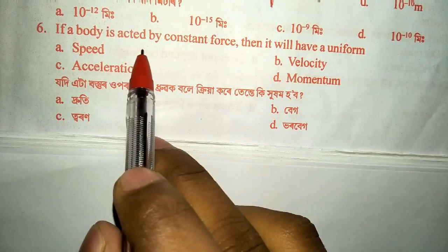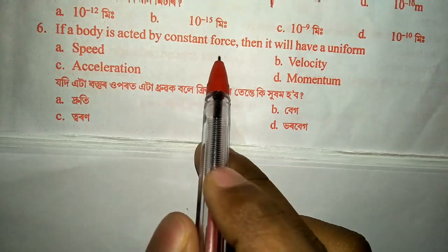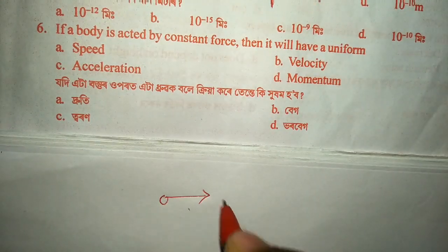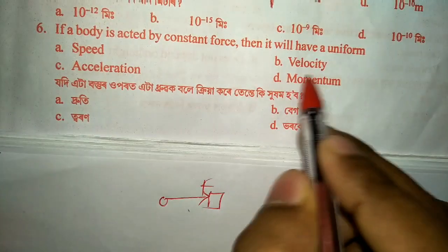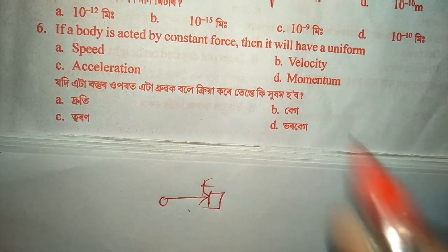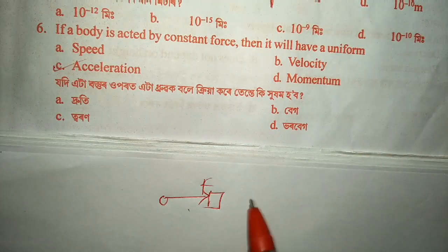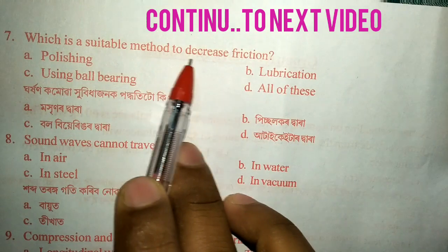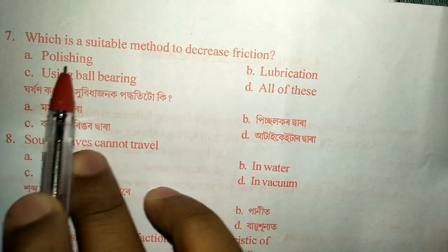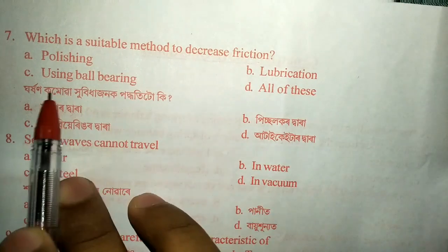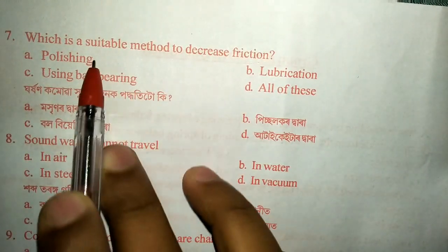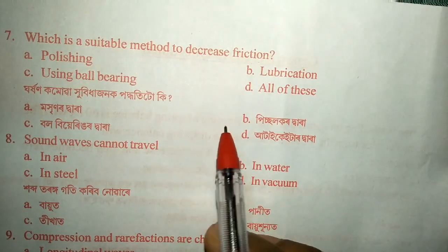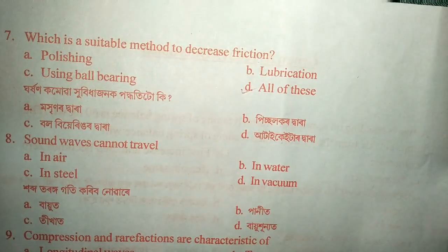Question number six: if a body is acted upon by a constant force, it will have uniform acceleration. The correct option is C — acceleration. Question number seven: which is a suitable method to decrease friction? Polishing, lubrication, and using ball bearings are all methods used to decrease friction, so the answer is option D — all of these.